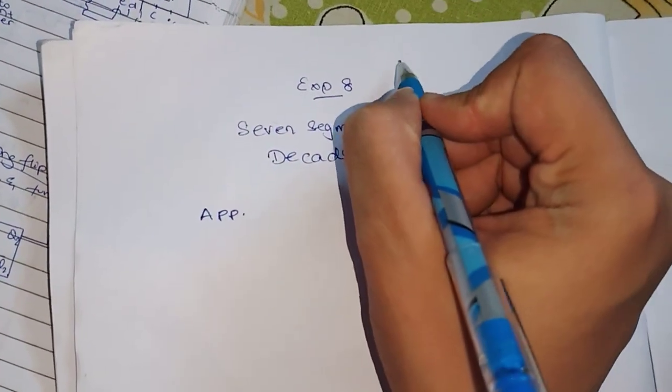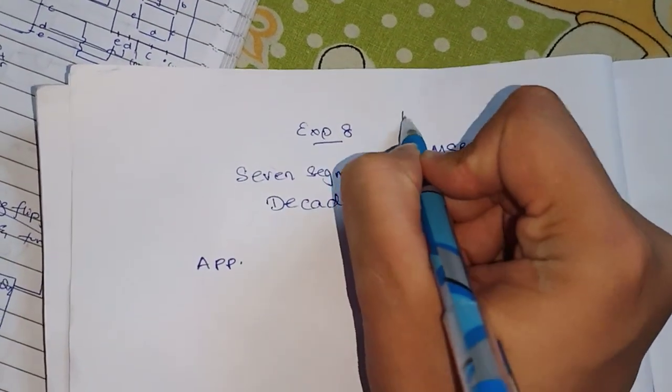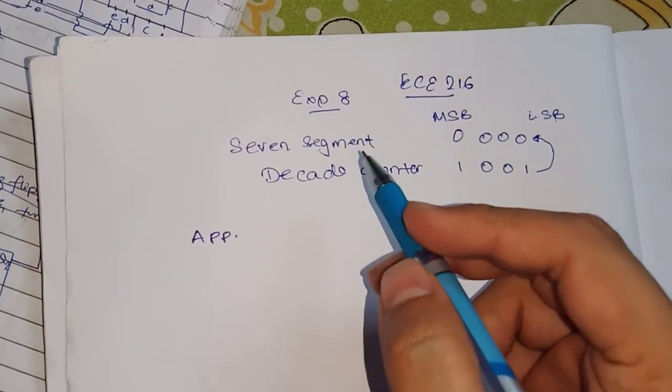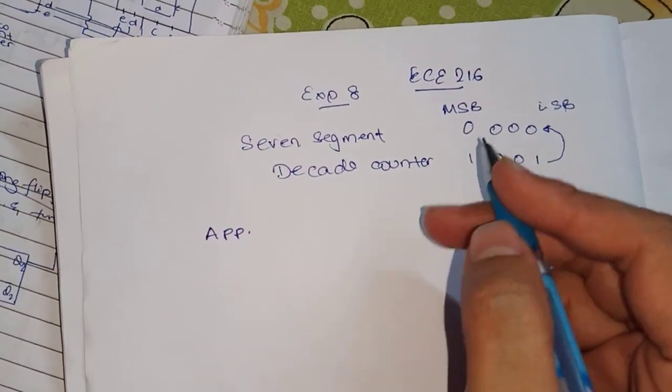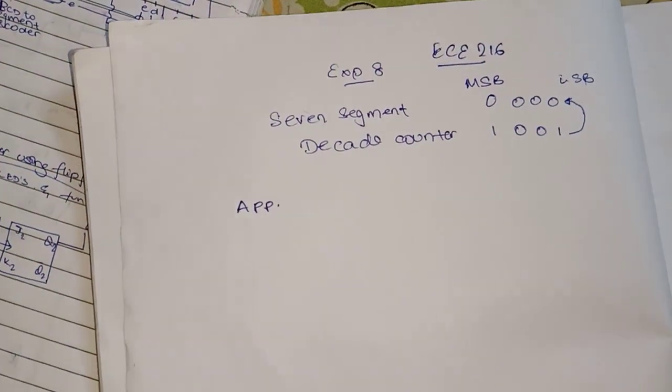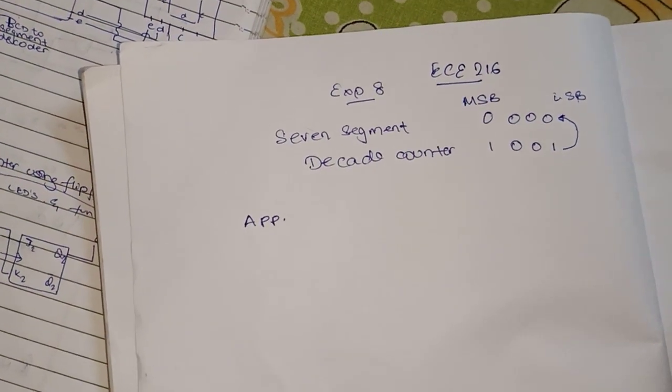Hey guys, today I will tell you about experiment number 8 of ECE216. It is a 7-segment decade counter, and in this you have to count from 0 to 9, that is total 10 counts.